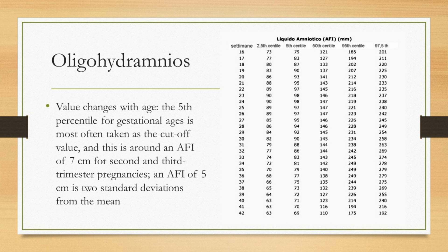The 5th percentile for gestational age is most often taken as the cutoff value, and this is usually around 7 centimeters for second and third trimester pregnancies. An AFI of 5 centimeters is two standard deviations from the mean.